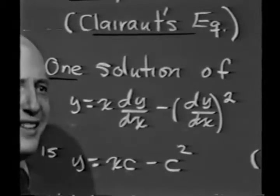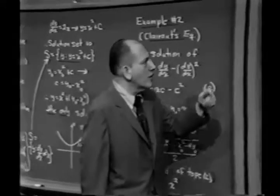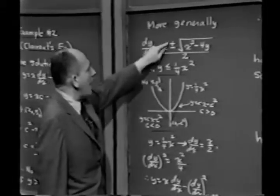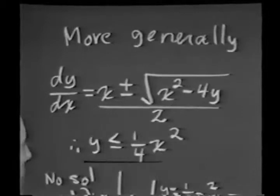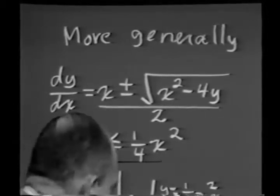Without boring you with the details of the quadratic formula all over again, it would have turned out more generally that dy dx is equal to x plus or minus the square root of x squared minus 4y over 2. And then I would have seen right from this,